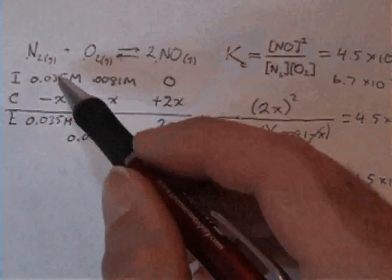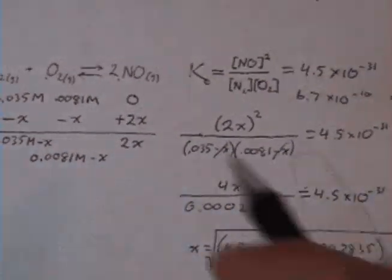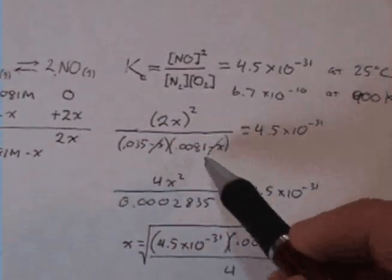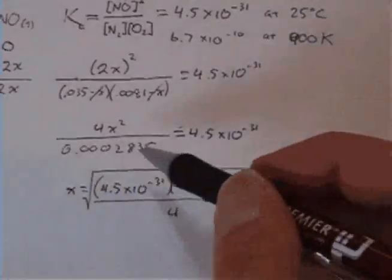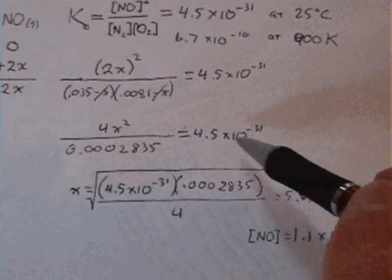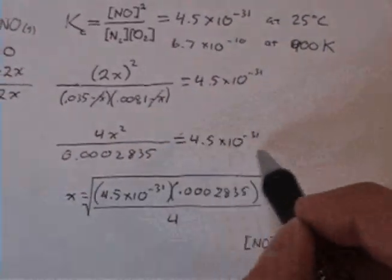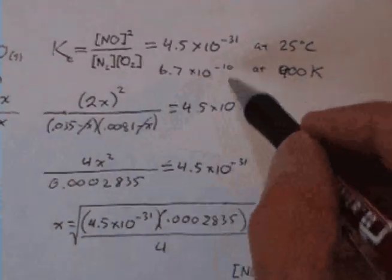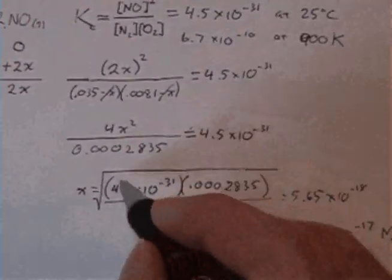So I'm just going to use what we did before and modify it slightly. We would set all of this up the same way: we have the initial concentrations, the final concentration is going to be 2x concentration of NO. We plug that in here, assume it's still going to be negligible—we can go back and verify that—and so when we calculate this now, up to this point instead of being 4.5 times 10 to the negative 31st, it'll be 6.7 times 10 to the negative 10th, so we're just going to substitute that in there.